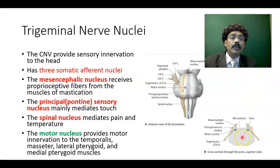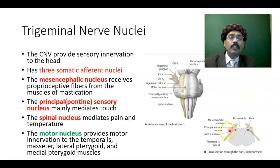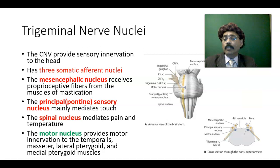Here we can see the nuclei: the mesencephalic nucleus, the motor nucleus, the principal sensory nucleus, and the spinal nucleus.